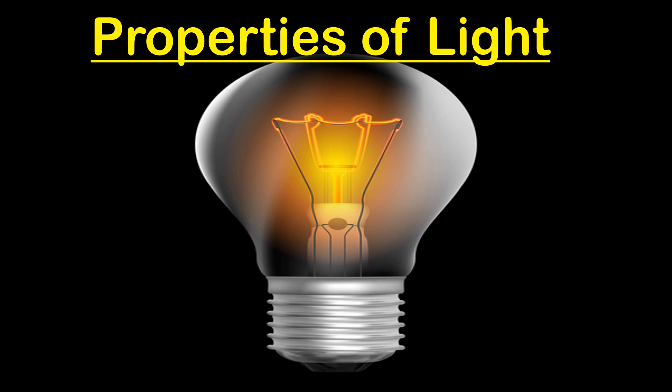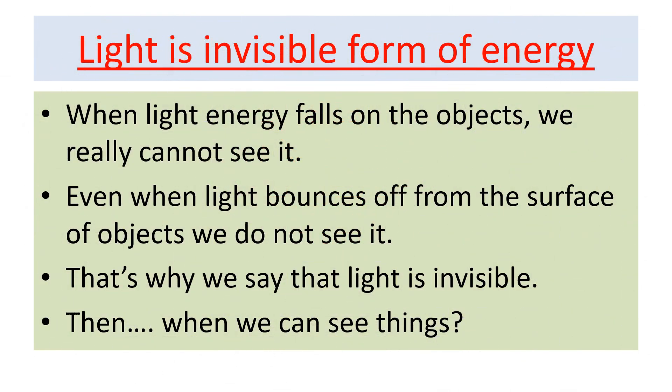Let's discuss the properties of light. Light is invisible form of energy. When light energy falls on the object, we really cannot see it. Even when light bounces off from the surface of object, we do not see it. That's why we say that light is invisible.